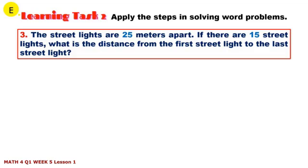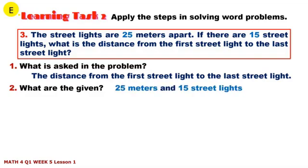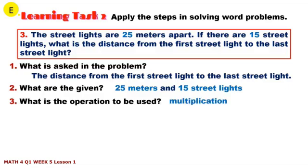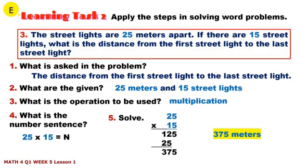Number 3: The street lights are 25 meters apart. If there are 15 street lights, what is the distance from the first street light to the last street light? Number 1: What is asking the problem? What are the given? What is the operation to be used? What is the number sentence? Solution: 25 times 15 equals 375. 375 meters.